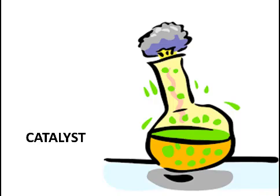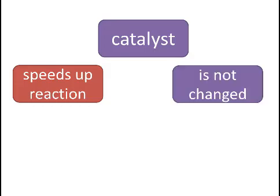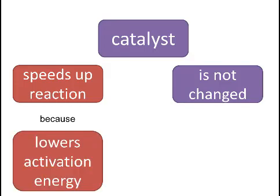What about a catalyst? What is a catalyst? A catalyst is a substance which speeds up a chemical reaction, but it doesn't itself get changed. How does it speed up the chemical reaction? It lowers the activation energy required for the reaction to occur.